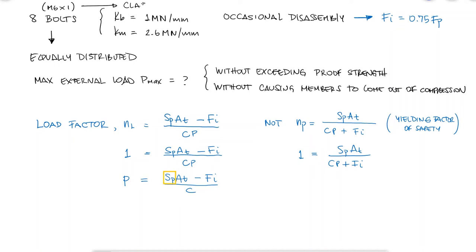We can look up the proof strength of class 5.8 bolts, which is a common material for the size, and we can look up the tensile stress area AT from the table of the book like we did in the main video, or by calculating the area using the mean diameter between the root diameter and the pitch diameter like we did two main videos ago.